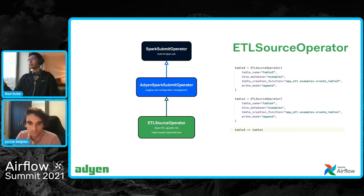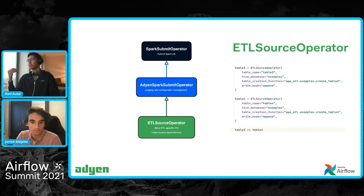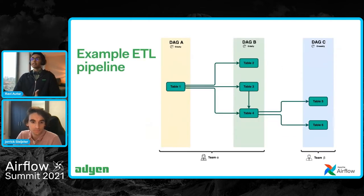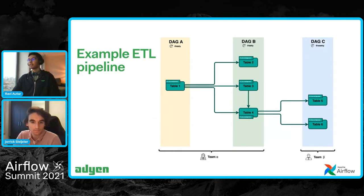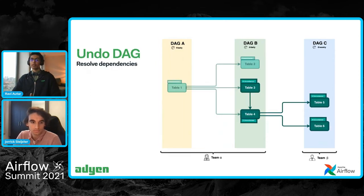In the code snippet here, you can see table three and table four being generated with the ETL source operator. It contains information on the Hive databases, has a table creation function, and defines the write mode for the table. At the end you can see the Airflow syntax for the dependency. In essence, all the tables in the previous example are just ETL source operators, and dependencies are managed through the ETL source operator. The only thing the undo DAG needs to do is use the capabilities of the ETL source operator to map out all dependencies.